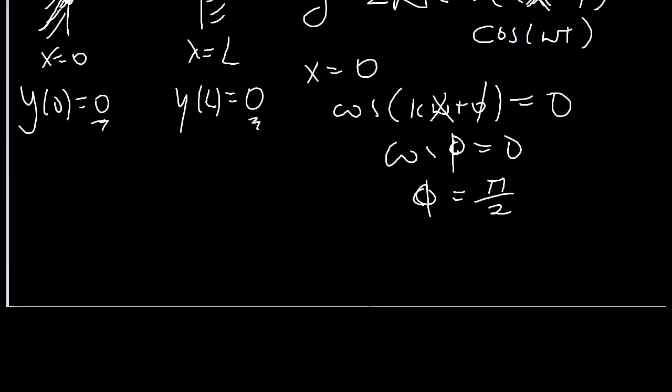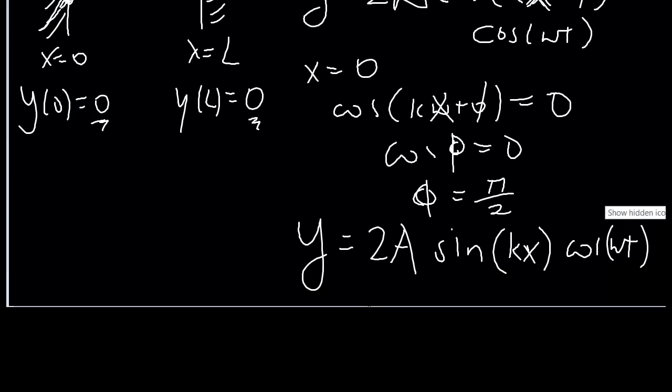So with that, we're going to rewrite our thing as A sin(kx) cos(ωt). And then we impose the other boundary condition, so it has to be zero, has to be sin(kL).